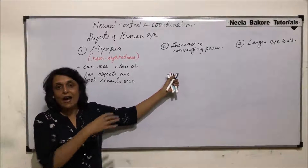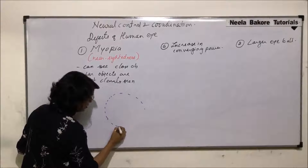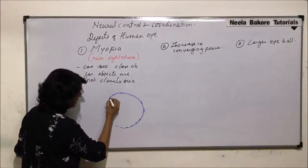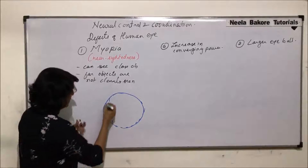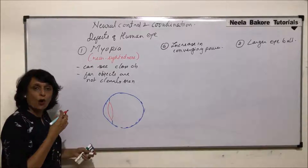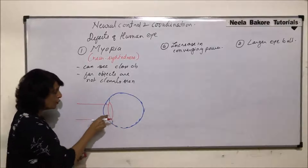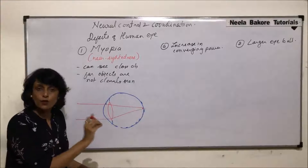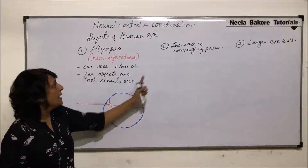Now let us first understand how the image is formed in a normal eye. In a normal eye, drawing this simple structure: here is the cornea with a slight bulge, and the lens is suspended with the help of the ciliary body and suspensory ligaments. When light rays from an object come in, they are converged by the lens, and the focus is formed right on the retina — this is normal.